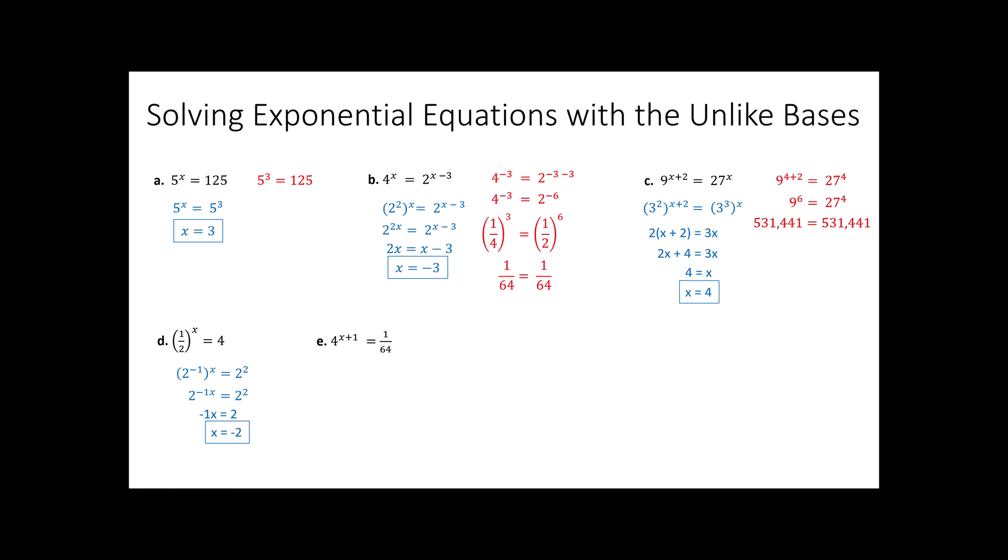How about this one? When I look at this, I see 1 64th as 64 to the negative 1st power. And I happen to know that 64 is 4 to the 3rd. That means 1 64th is 4 to the negative 1st. Again, the bases match. Set the exponents equal to each other, property of equality to get your solution.